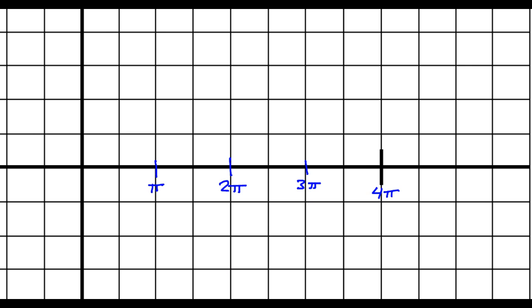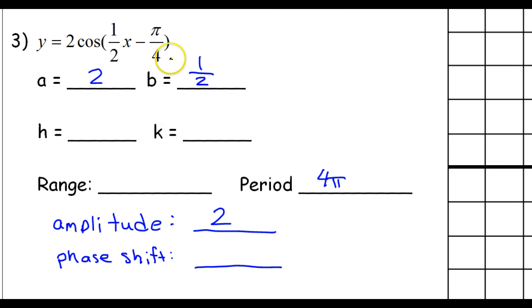So there is no k value. That means the midline is going to stay the x-axis. This h value is going to be the phase shift once I find it. The h value is not π over 4 in this case. When there's a B value, you have to factor that out in order to figure out what the h value is. We'll come back to that.